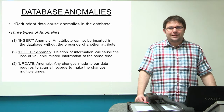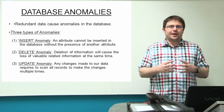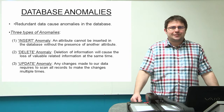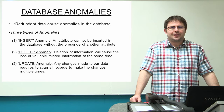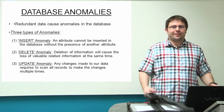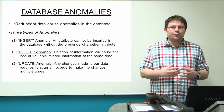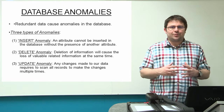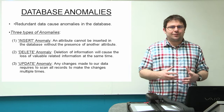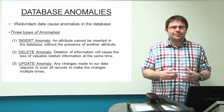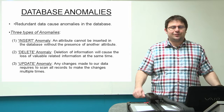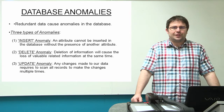With normalization, we try to make data more normal. Normalization is what we call a bottom-up technique. That means we start from something very specific, like a value or an attribute, and we move to something more generic, more abstract, like an entity. So for example, I can give you a set of data and from this data, from these values, you will need to extract the entities and develop the entity relational model.